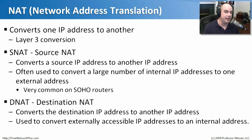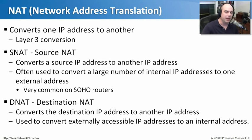There's also something called destination NAT. We don't do this very often in our home office. This takes a destination IP address and converts it to another IP address. This is used most often when somebody is trying to access a device on your internal network using your external IP address. You have to see that packet coming in, recognize it's destined for your internal server, and convert it so it can use the internal IP address numbers. That's called destination NATing.